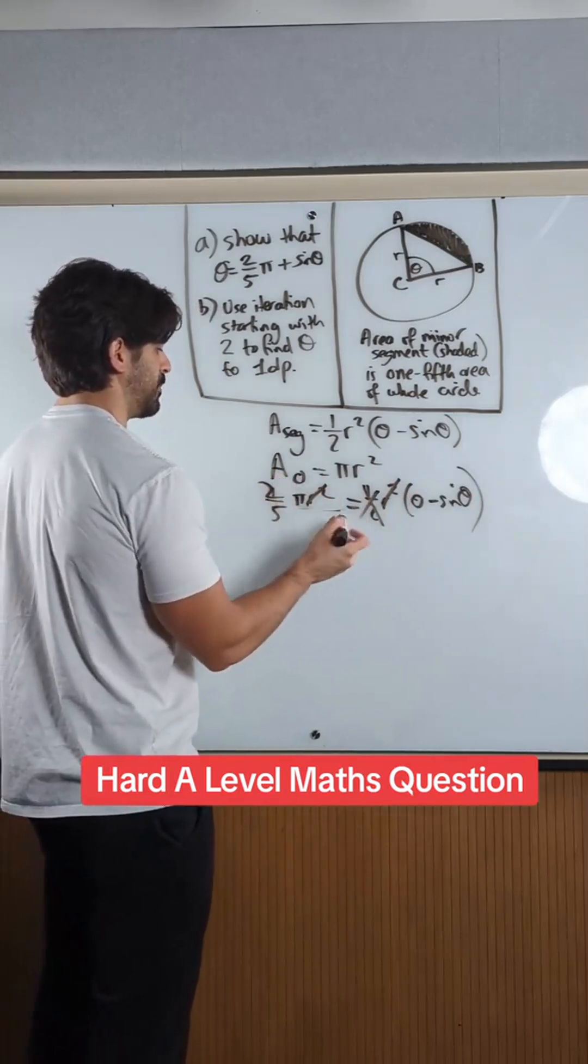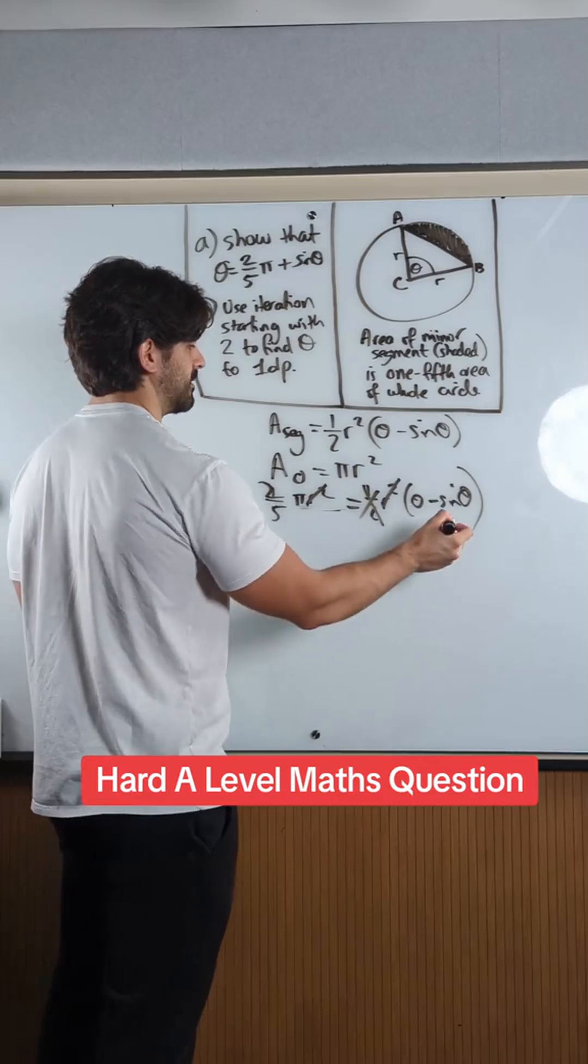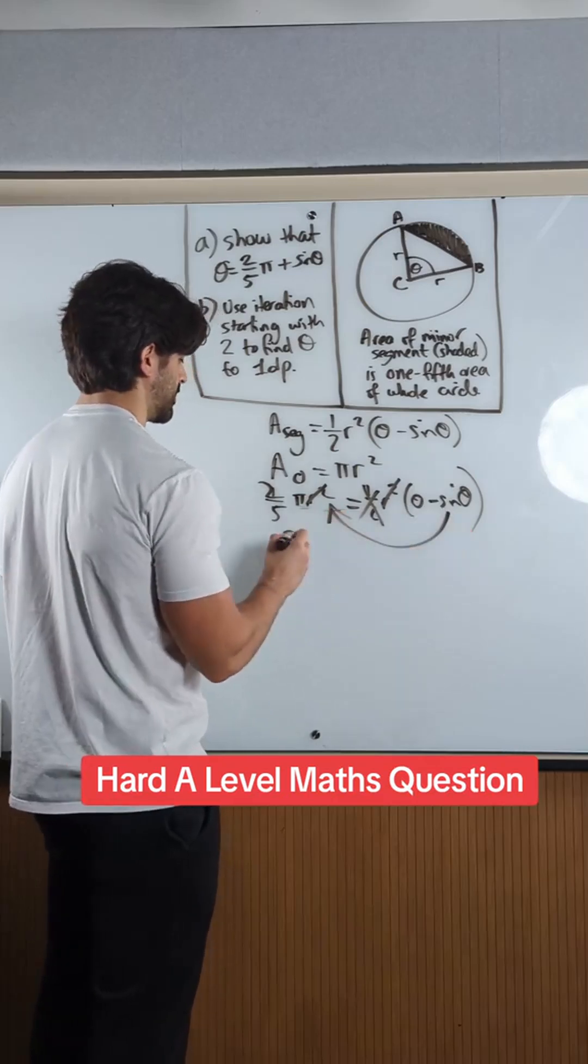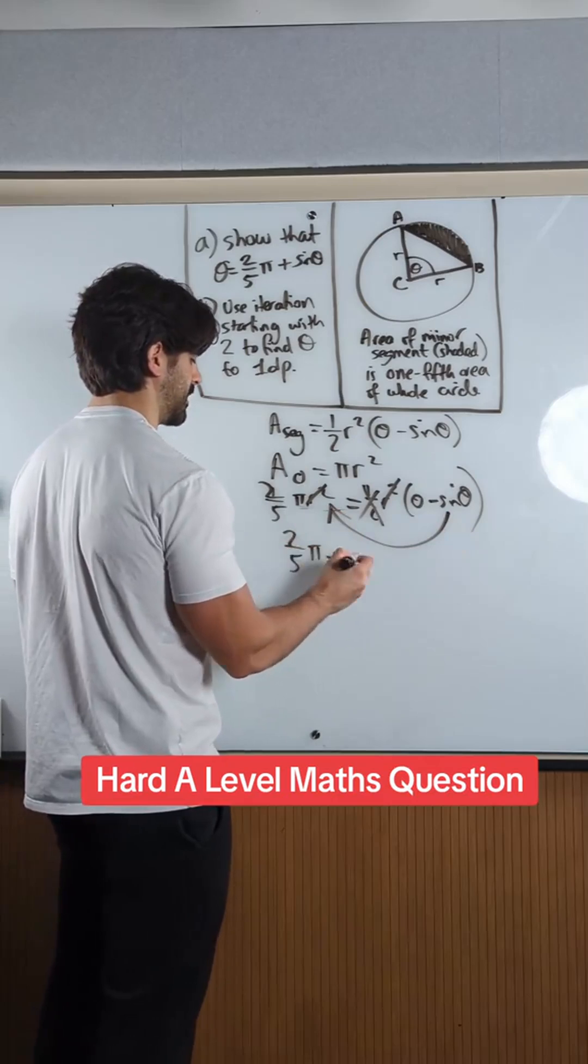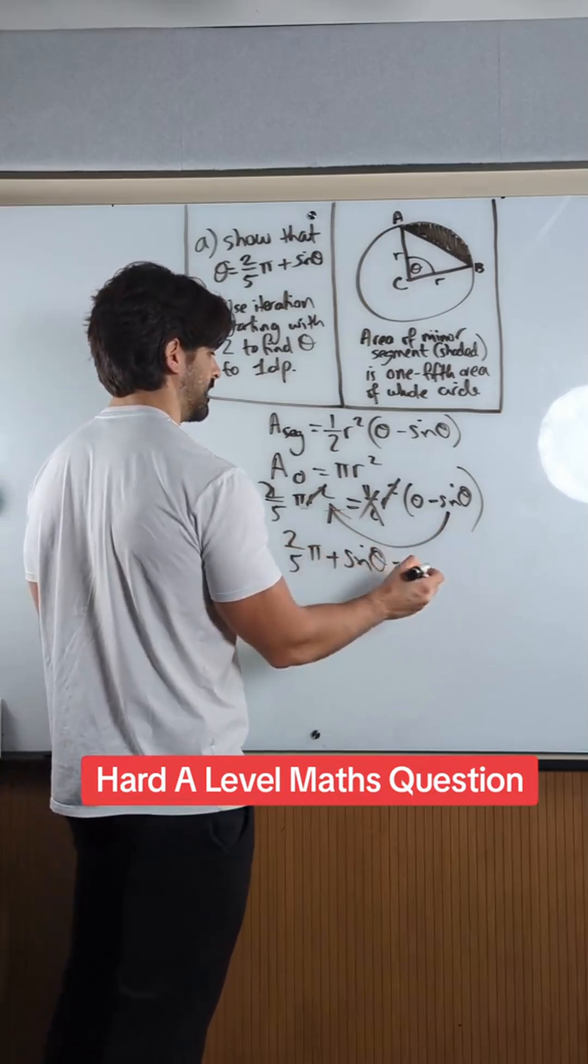So we have 2/5π is theta minus sine theta. Therefore 2/5π plus sine theta is theta.